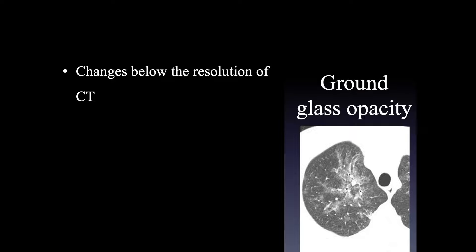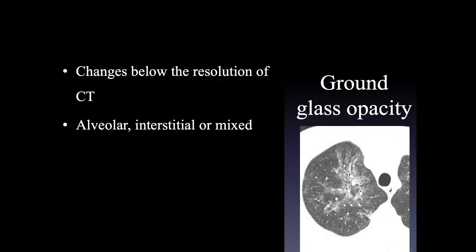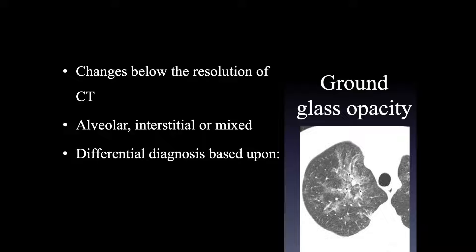Ground glass opacity, on the other hand — opaque lung abnormal — represents changes below the resolution of CT. In that sense, it's one of the most nonspecific chest CT findings that we're going to see. It can be alveolar, interstitial, or a mix of the two.